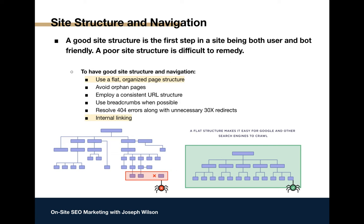A good way to fix that is to create what's called a shallow site structure — keep your pages as close to the home page as possible. Your home page holds the majority of your site's linking authority. When other companies link to you they frequently link to the home page. Think about a coral website: the home page at the top, then maybe a page about saltwater coral, and under that a page about a very specific neon green saltwater coral — organized by topic hierarchically.